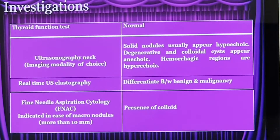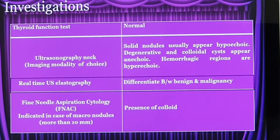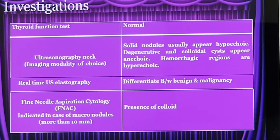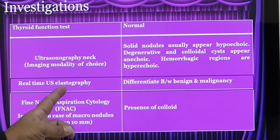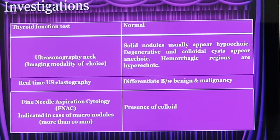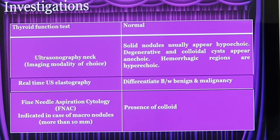In ultrasonography, there is a new variety called elastography, which helps us to differentiate between a benign condition and a malignancy. This is a controversy — some centers have good results and some do not. Elastography helps us differentiate a benign lesion from a malignant lesion.